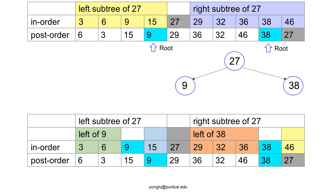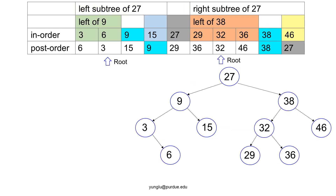The right subtree of 38 is 46. The left subtree of 9 has 3 and 6. From the post-order traversal, 3 appears after 6. Thus, 3 is the root and 6 is the right child. The right subtree of 9 has only one node, 15. The left subtree of 38 has 29, 32, 36. From the post-order traversal, 32 appears last. Thus, 32 is the root. 29 is the left subtree of 32, and 36 is the right subtree of 32.